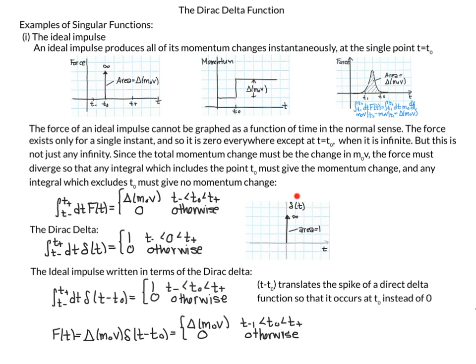This motivates our Dirac Delta function. Instead of force, we use the Dirac Delta, initially centered at T equals zero. If we integrate from T-minus to T-plus and include the point zero, the area equals one. If we don't include the point zero — for example integrating to the right of or to the left of T equals zero — the integral is zero.